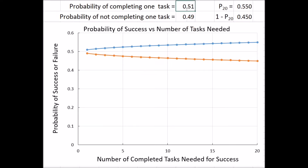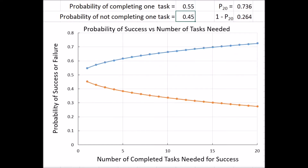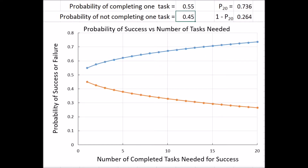Let's make it a little higher — 0.55. Now we see quite a big difference. The probability of success increases rather dramatically with the number of tasks you want to achieve before failing to achieve that number. By the time you get to 20 tasks, you have almost a 75% probability of succeeding before failing.